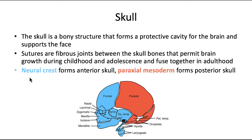Neural crest forms the anterior part of the skull here in blue, whereas paraxial mesoderm that eventually contributes to somitomeres and somites forms the posterior part of the skull here in red. Those are terms that we talked about in our last video on embryology.